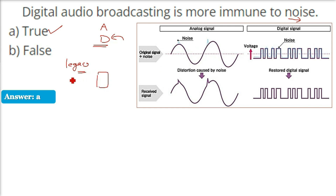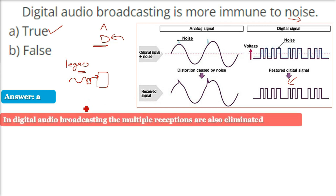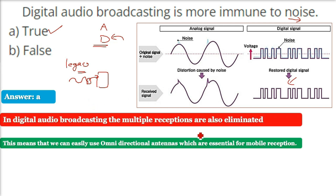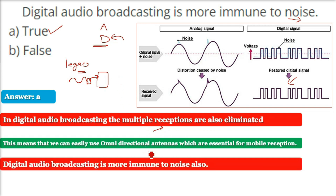Legacy instruments such as modems take the analog signal and convert it to digital, which is how computers understand incoming signals. In digital form, noise can be removed because data is just ones and zeros. Additionally, in digital audio broadcasting, multiple receptions are eliminated and omnidirectional antennas can be used, making it more immune to noise compared to analog.